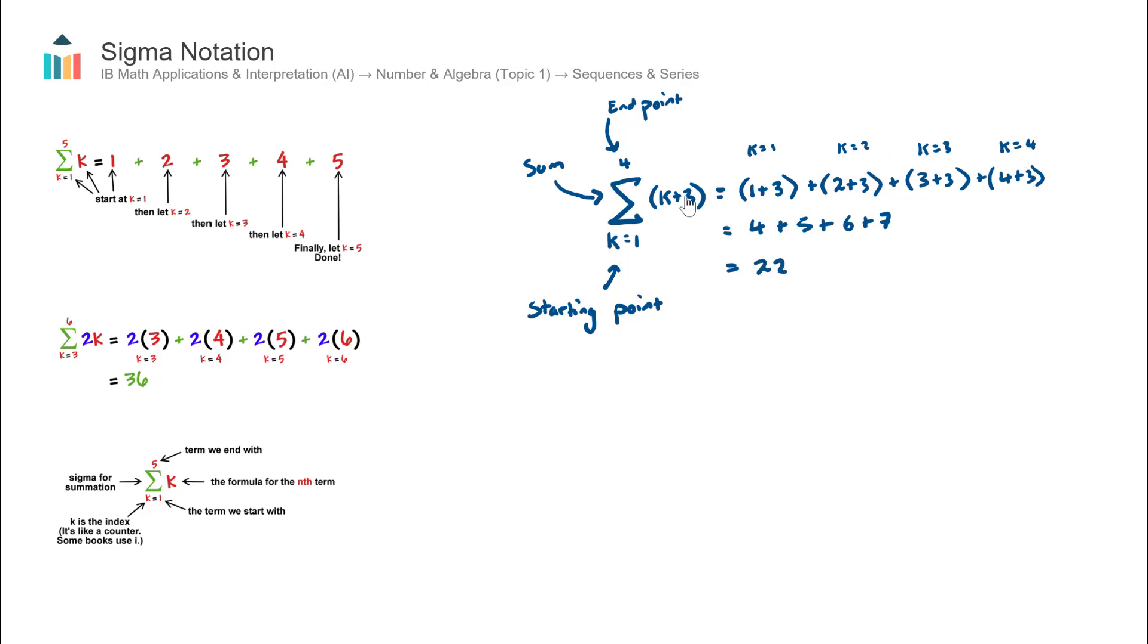You can see here, although it looks complicated, this is just a concise way to say we have k plus 3 as our formula, start at 1 and end at 4, and sum all of the terms up. That's how it plays out, and it gets a final answer of 22.